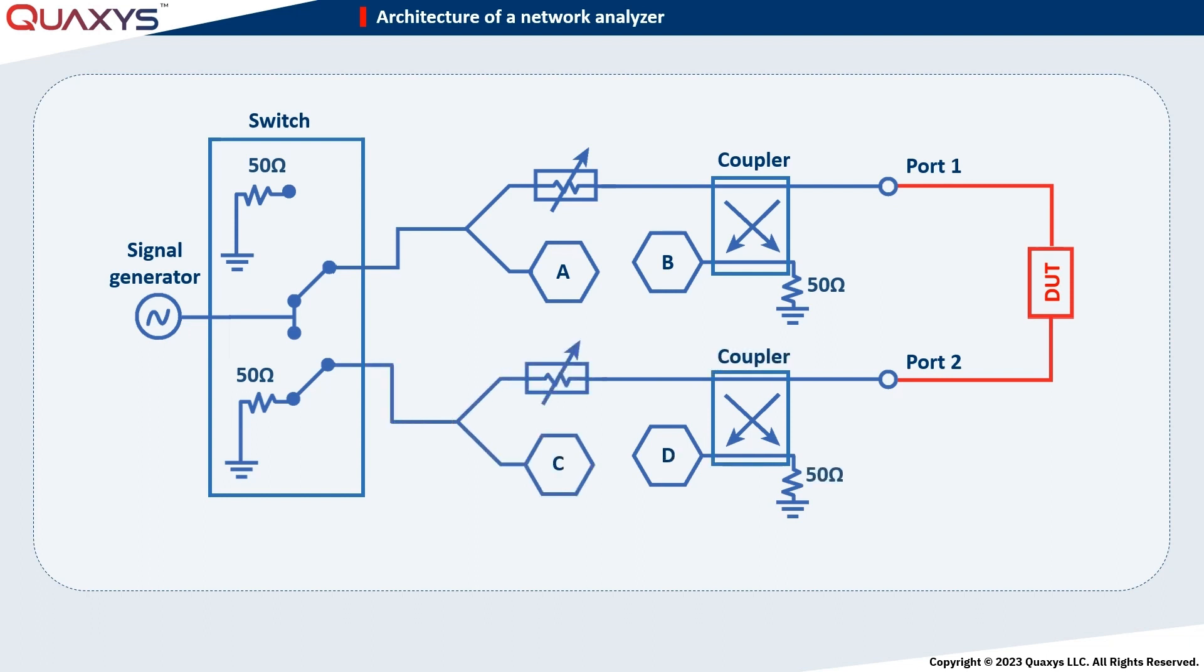Now, focusing on the scenario where the signal is injected into port 1, the generated signal traverses a switch and encounters a power divider, which equally splits the signal between its arms. One arm of the power divider contains a variable attenuator to adjust the power level, while the other arm connects to a detector, referred to as detector A. Subsequently, the signal from the upper arm proceeds through a coupler and interacts with port 1, where the device under test is connected.